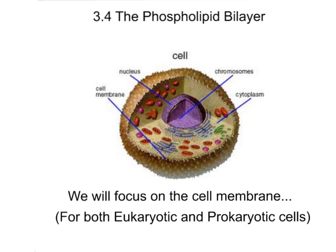Hello and welcome to our section called the phospholipid bilayer. From our last section we were talking about the prokaryotic cell, and the prokaryotic cell has a plasma membrane or a cell membrane very much like a eukaryotic cell. So before we move on to eukaryotic cells, we're going to talk about this membrane — this cell membrane or plasma membrane. It's an interchangeable term.